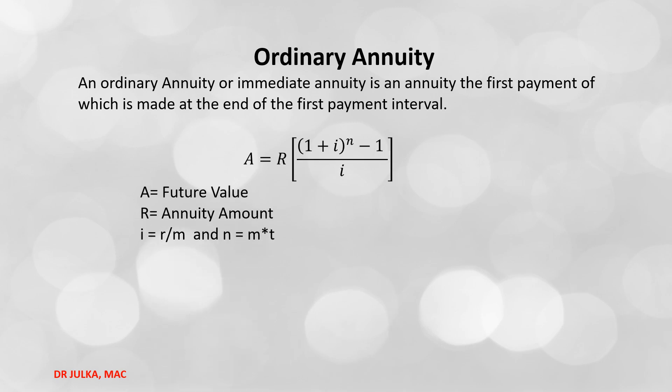Future value of annuity equals to amount of annuity, multiplied by [(1 + i)^n − 1] / i, where i = R/m and n = m × t, and m is the number of compounding periods in a year.